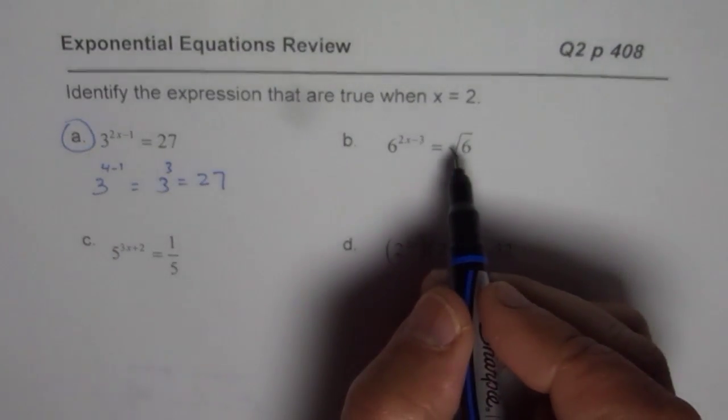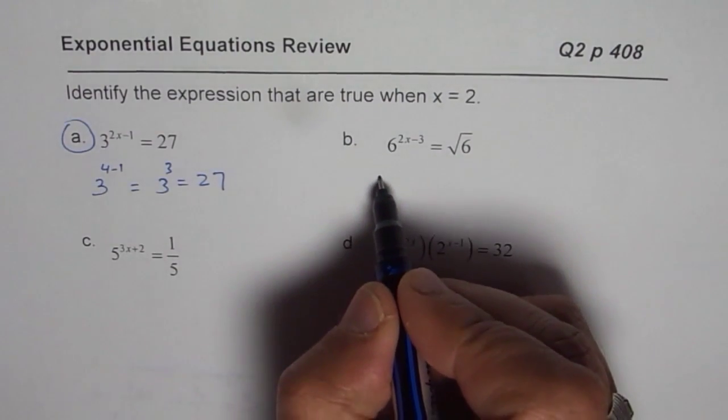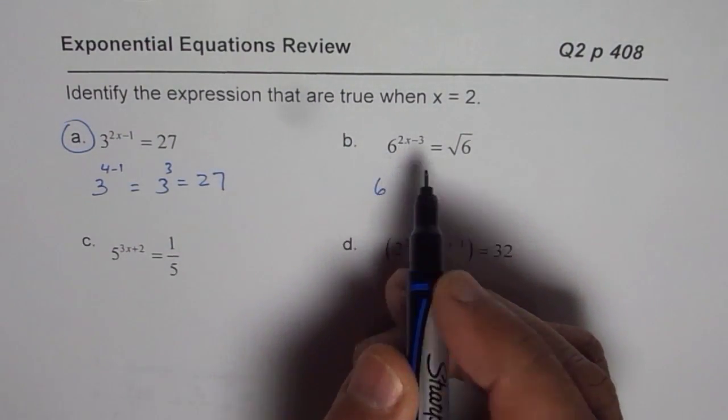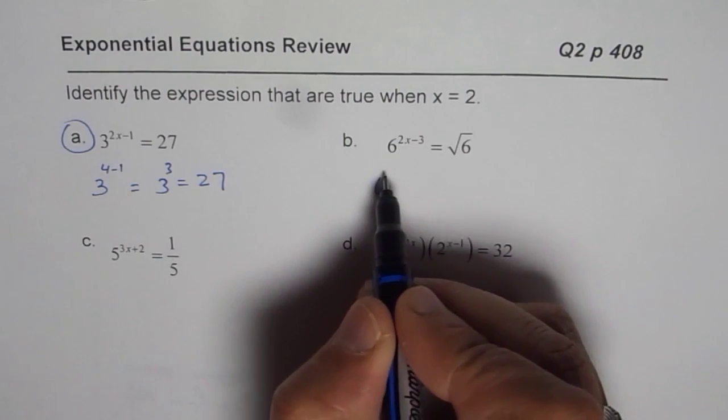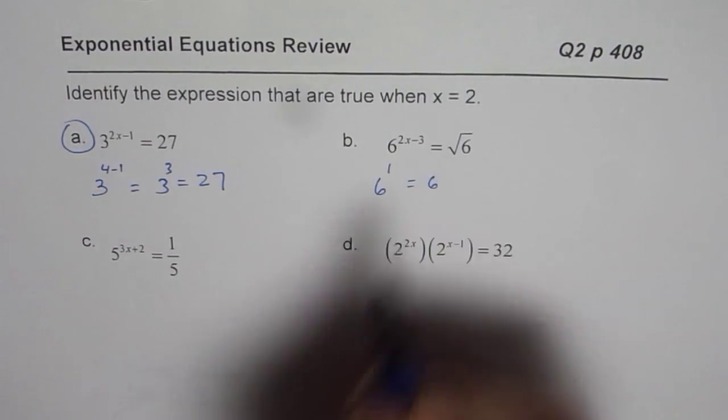You can check the others also. So this one is 6 to the power of 2 times 2 is 4, 4 minus 3 is 1. So this is 6, not square root.